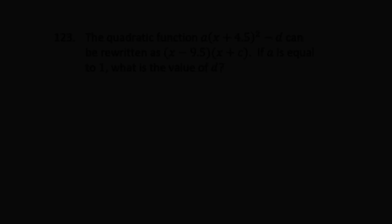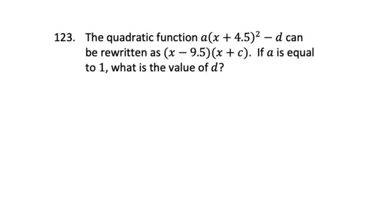The quadratic function a(x + 4.5)² - d can be rewritten as (x - 9.5)(x + c). If a is equal to 1, what is the value of d? So this is one of those problems that might look kind of weird, but at its core, it's literally just a quadratic function problem. And if you work through it and take the time, anyone can solve this problem.